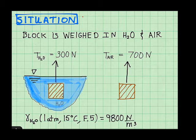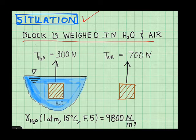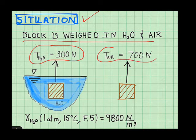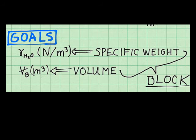So here's how I build my documentation. I define my situation by describing the problem in one sentence. I make a situation diagram. This represents the tension force required to hold the block in the water, and this represents the tension force to hold the block in air. And here, I've documented the specific weight of water. I've documented my goals, so I'm looking for the specific weight and the volume of the block itself.